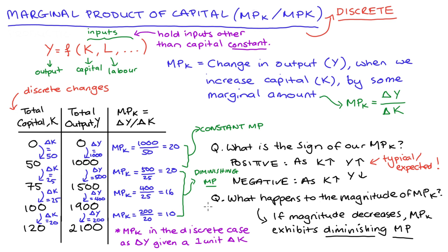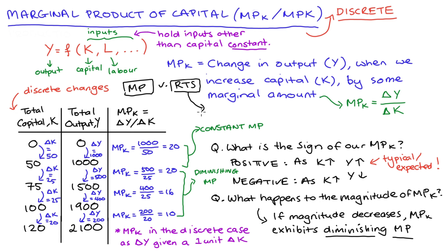So that's finding marginal product in the discrete case, including identifying diminishing marginal product. Before finishing, I'll remind you that when thinking about marginal product, none of our other inputs to production are changing as we increase capital. This is important because it distinguishes marginal product from returns to scale. With returns to scale, all inputs are increasing by some factor and we see what happens to output. With marginal product, we're only increasing capital and observing the result.